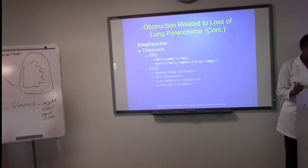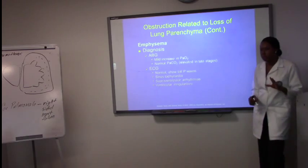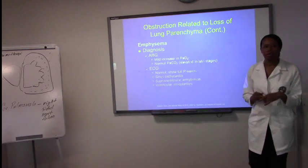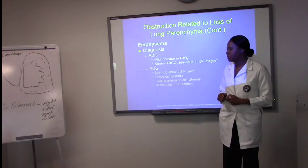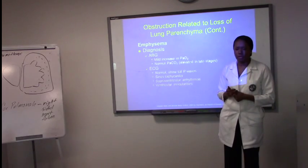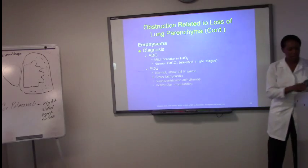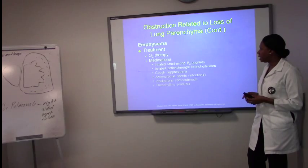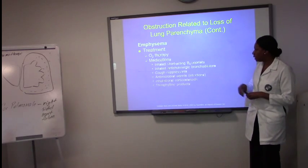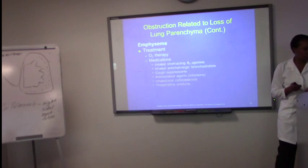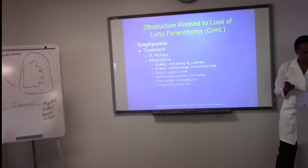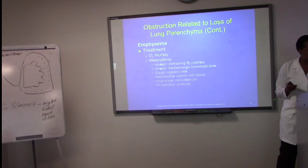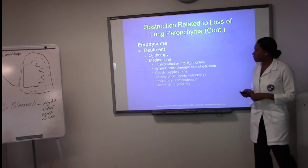You will see the term cor pulmonale in many books and will be charting it that way as well. For treatment, it's similar to chronic bronchitis: oxygen therapy and B2 agonist bronchodilators. The same type of treatment we discussed for chronic bronchitis applies here as well.